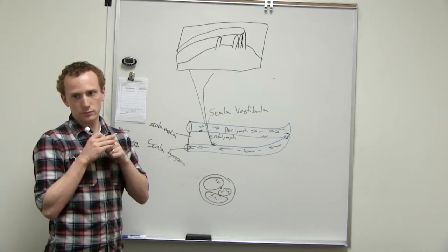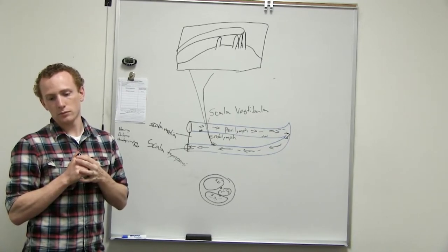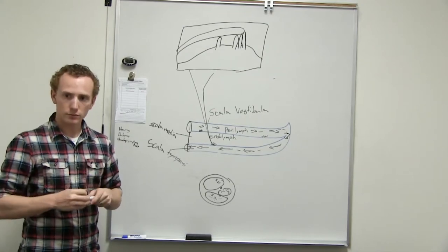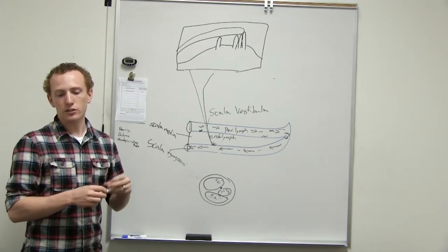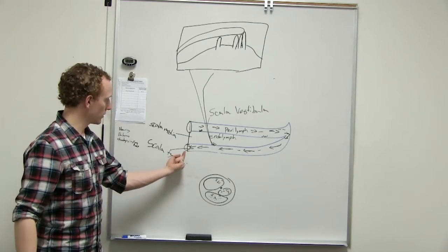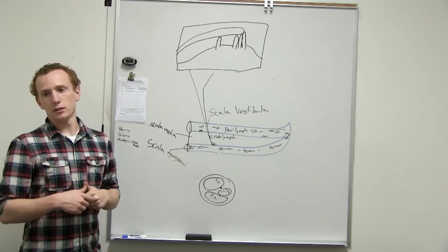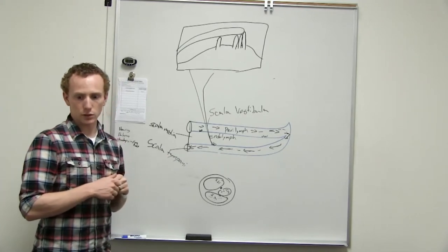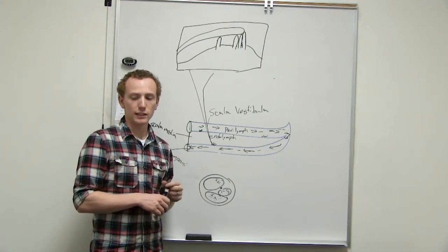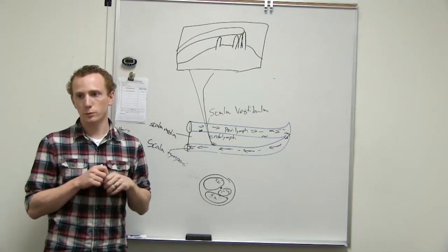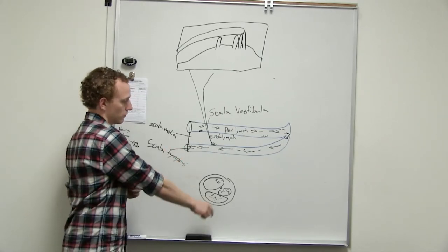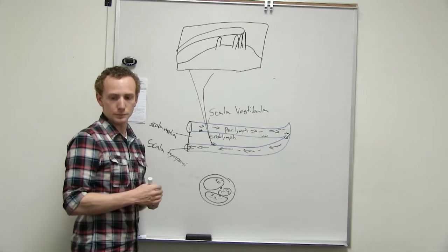Is the scala tympani more like sound absorption, like the extra of it? Yeah, I guess you could think of it that way. I wouldn't say sound, I would say vibration absorption. And that's going to be released at the round window. Then where does it go? After the round window, it's air after that. It vibrates that air, and that air is equalized through the auditory tube.